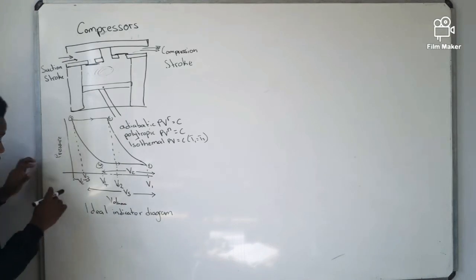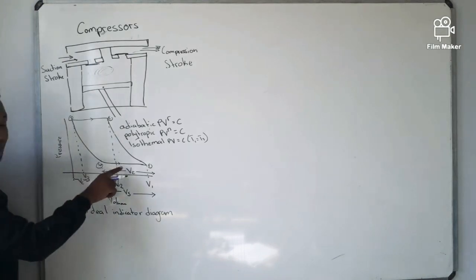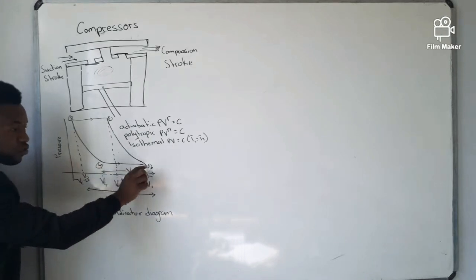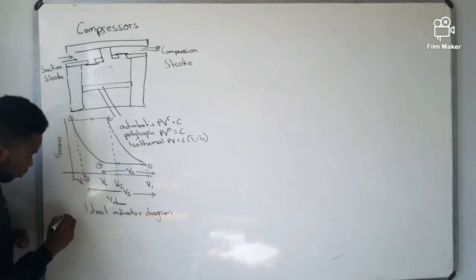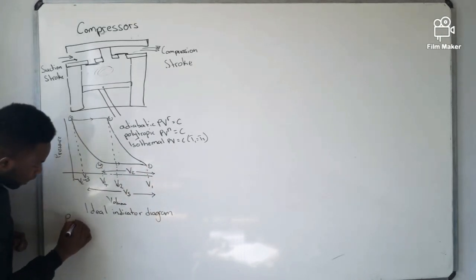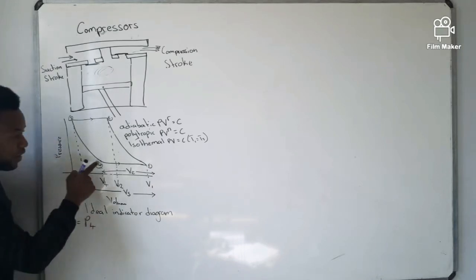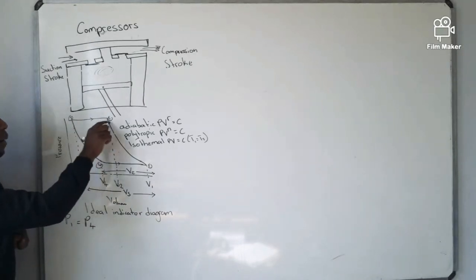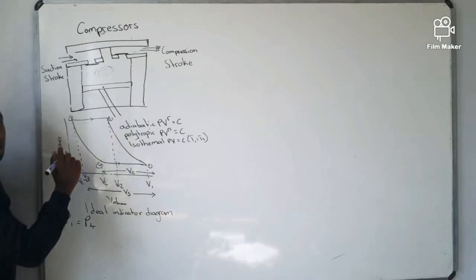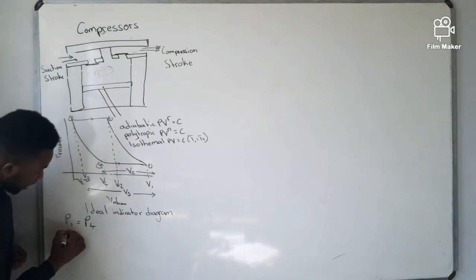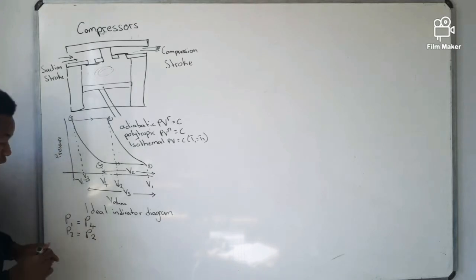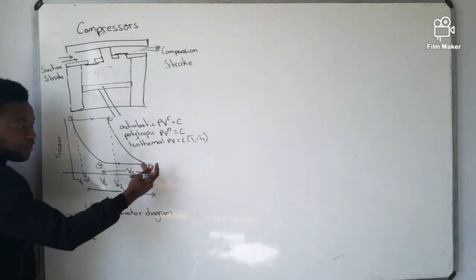From this diagram, you can quickly identify that on the pressure axis, P4 equals P1, so you can write P1 equals P4 on the same level. You can also identify that P2 equals P3.